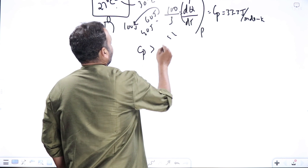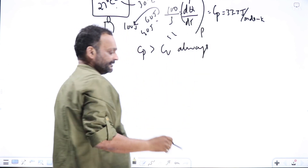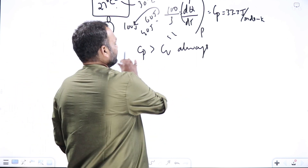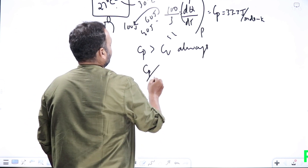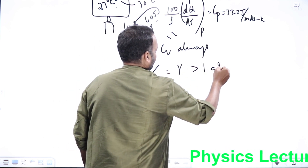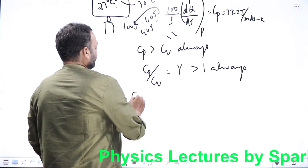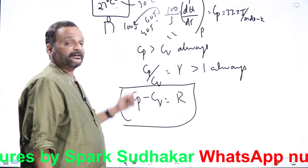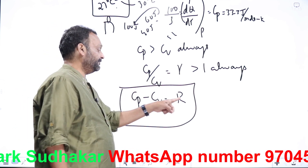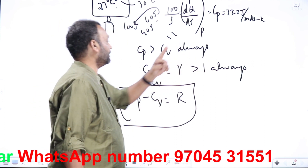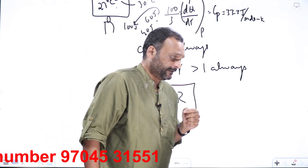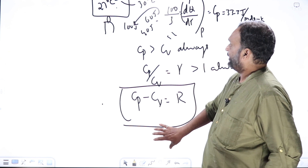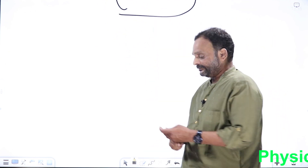CP is always greater than CV for gases (exceptions occur for liquids, which we'll see after the second law). The ratio CP/CV is denoted by gamma, which is always greater than 1. The difference CP minus CV equals R for one mole of gas. These are the key relations: CP minus CV equals R, CP/CV equals gamma, gamma greater than 1.